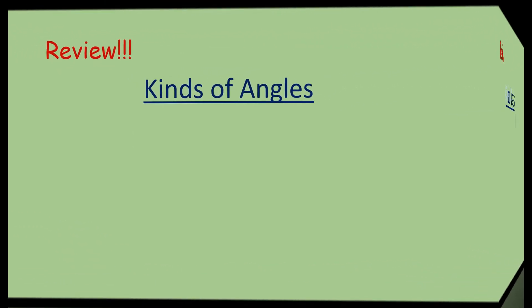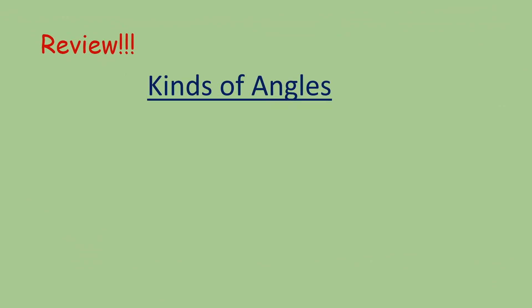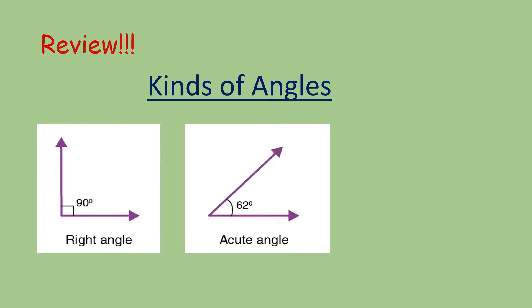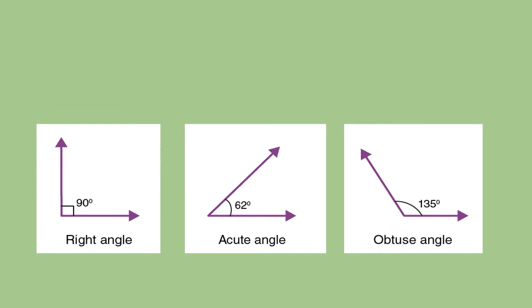Let us have a short review about our previous lesson. These are the kinds of angles. Can you name the three kinds of angles? These are the right angle and acute angle. What would happen if I use a third line in each of these angles to form a closed shape?